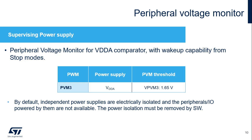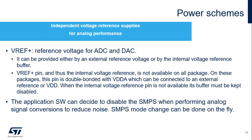To guarantee any of the supply sequences on the application, power isolation has been implemented and is active by default. It is the role of software to enable the needed supplies by removing the power isolation. The ADC and DAC voltage references can be provided either by an external supply voltage or by the internal reference buffer. This allows improvement of the converter's performance by providing an isolated and independent reference voltage. The VREF plus pin and internal voltage reference are not available on all packages; in these packages, VREF plus is double-bonded with VDDA and the internal voltage buffer must be kept disabled.